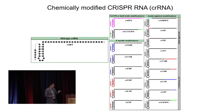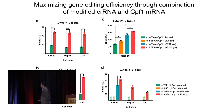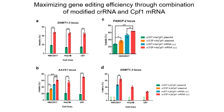Combining the modified guide RNA and modified messenger RNA compared with the wild-type guide RNA and original mRNA encoding AsCPF1, we saw consistent increases in gene editing efficiency across three different gene loci. We also tested another CPF1 family protein, LbCPF1, where the increase was even more profound.